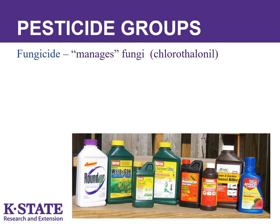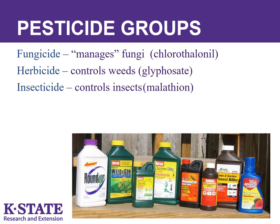Pesticides are grouped based on what they control or manage. Many people think pesticide and insecticide are synonymous terms, but they aren't. Pesticide is a more general term and includes fungicides, herbicides, insecticides, miticides, as well as some lesser known groups such as bactericides. Fungicides are used to control fungus diseases, herbicides control weeds, miticides control mites, and insecticides control insects. All of these are pesticides.